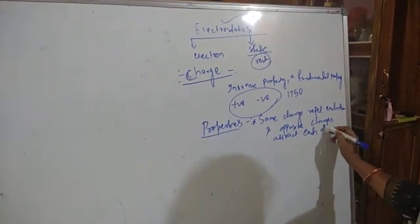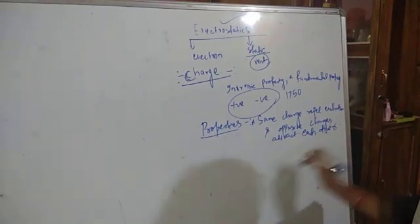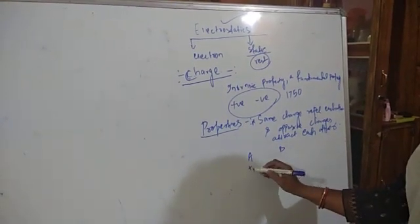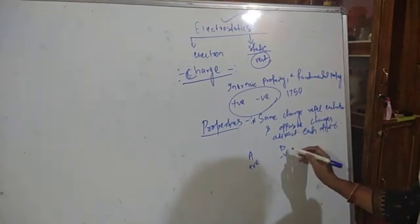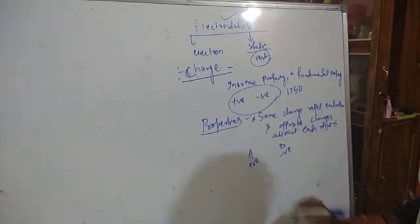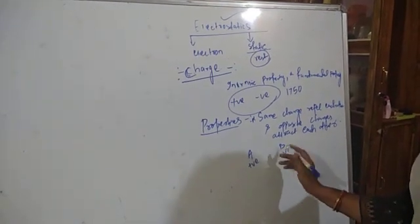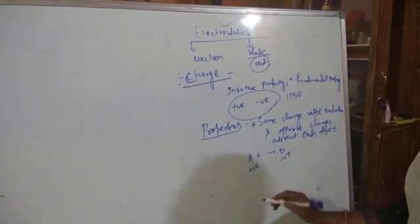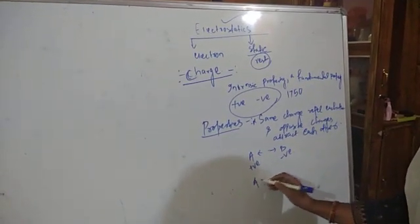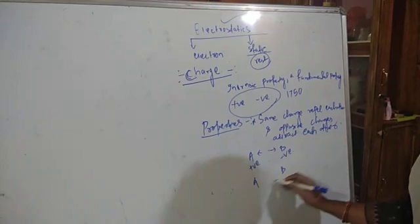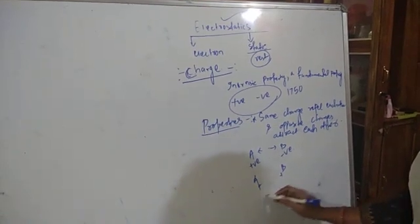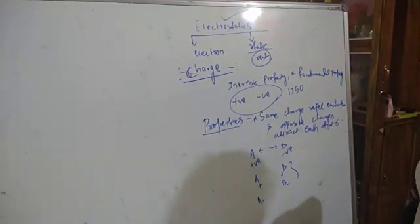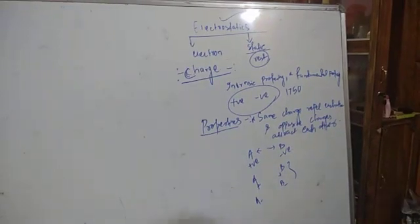For example, if two bodies A and B are there, A is positively charged and B is negatively charged, then these two bodies attract each other. But when two bodies A and B are both positively charged or both negatively charged, then the two bodies repel each other.